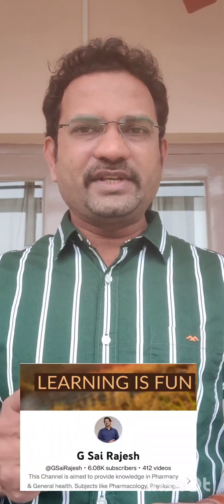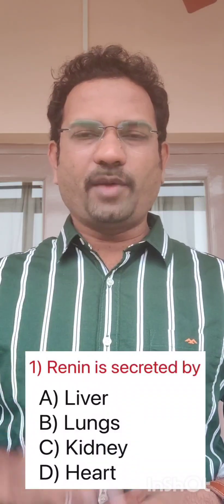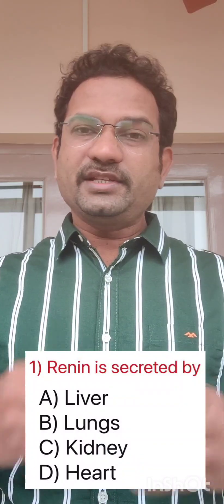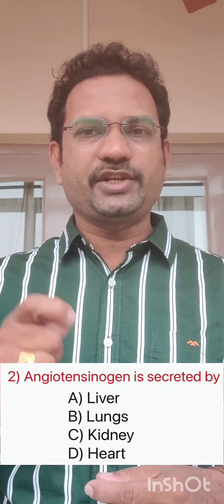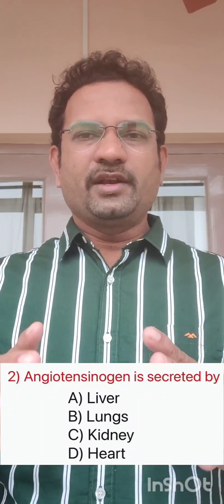Welcome to the drug inspector exam preparation video. In this video, I will explain two previously given drug inspector questions with answer explanations. Question number one: which of the following organs releases renin? Options are liver, lungs, kidney, and heart. A related question: which organ releases angiotensinogen? Options are the same: liver, lungs, kidney, and heart.